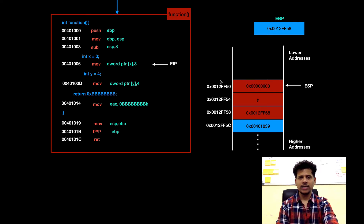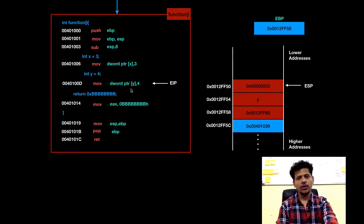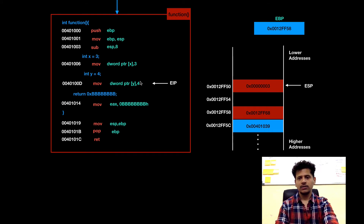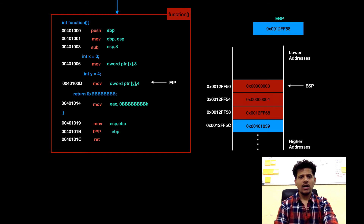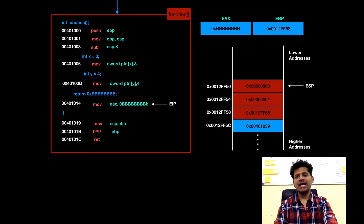We have moved 3 onto the stack. Next C statement is we are defining integer y equals 4. For that we are moving 4 into the space allocated by the compiler. It got moved. Now function is returning — for that we will move the return value into eax. That got done. Now function is ending here.